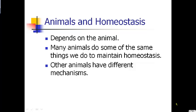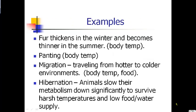Plants even do homeostasis — they will drop their leaves in winter to conserve water so they have the perfect water balance to live through the winter. Fur in many animals thickens in winter to stay warmer and thins in summer to stay cooler. Animals will pant to cool down, migrate to warmer or colder environments depending on the time of year, and hibernate — slowing down their metabolism to survive through harsh temperatures on the food and water supply already in their bodies. All of these are examples of homeostasis: an animal, person, or plant trying to maintain perfect body balance.